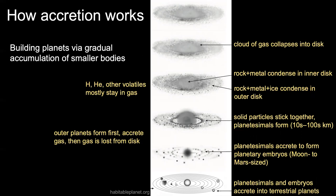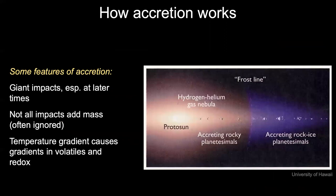Planetesimals are bodies that are tens to hundreds of kilometers in radius. The outer planets are thought to have formed first — they got big enough fast enough to accrete some of the gas before it was lost from the disk. Meanwhile in the inner solar system, these planetesimals accrete to form larger bodies called planetary embryos, which are moon- to Mars-sized bodies. Finally, all of these planetesimals and embryos accrete to form the four terrestrial planets we see today.